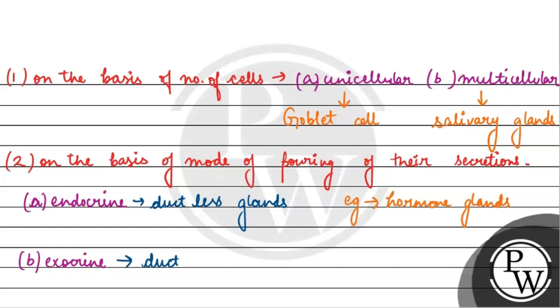Duct glands are called exocrine glands. That means their secretion goes through a duct to target organs. Their examples are mucus, saliva, ear wax, etc.